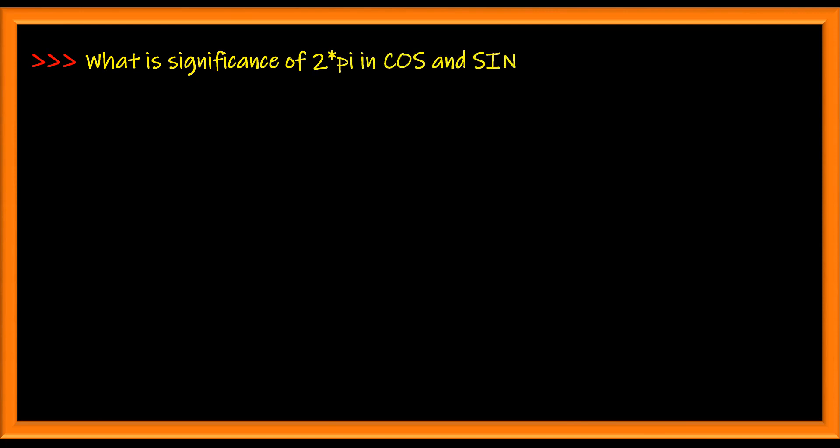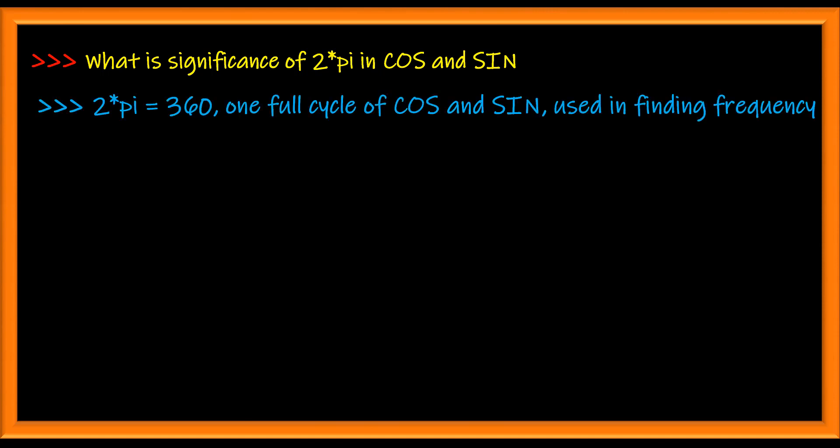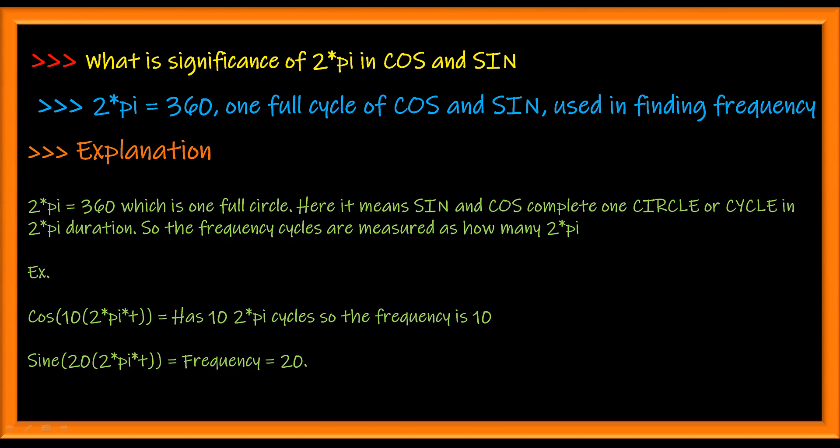What is the significance of 2π in cosine and sine? 2π signifies 360 degrees or one full cycle of cosine and sine, and this is used in finding the frequency of sinusoids or a periodic signal in general. For example, cos(20πt) contains 10 times 2π, so the frequency is 10. cos(40πt) contains 20 times 2π, so the frequency is 20.